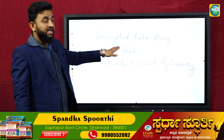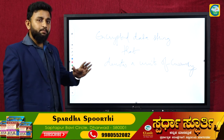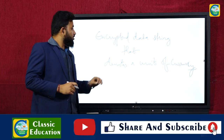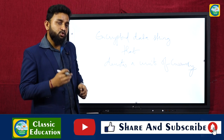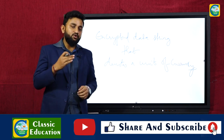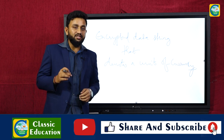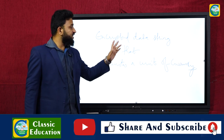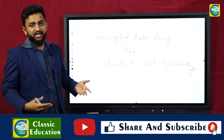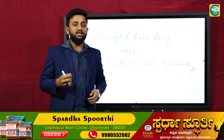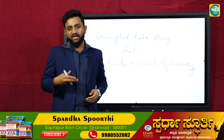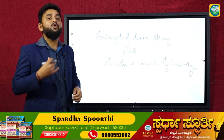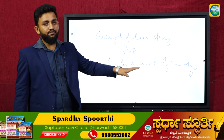Cryptocurrency is an encrypted data string that denotes a unit of currency. What do you mean by encryption? I think all might have been using WhatsApp — there is end-to-end encryption. Encryption is nothing but a lock and key; it is a more secure form of data. This encrypted data has some value to it — that is the meaning of a unit of currency.